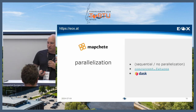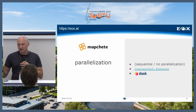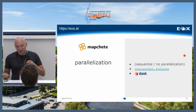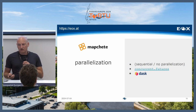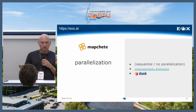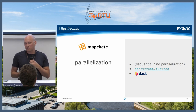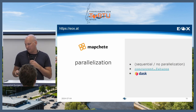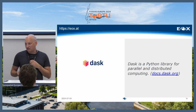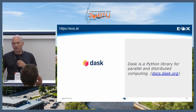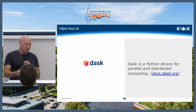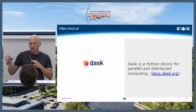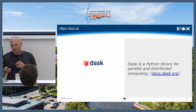Let's move on to parallelization. Mapchete internally creates tasks and decides how to process them. The simplest case is no parallelization — do it sequentially. It can also do it in parallel using Python's concurrent.futures multiprocessing capability, and as an addition, it can use Dask. Dask is a Python library for parallel and distributed computing. It's very nice because it replicates the concurrent.futures API, so you can have both in your code and abstract them really nicely.